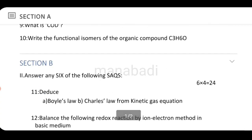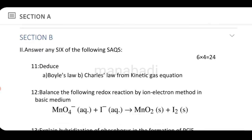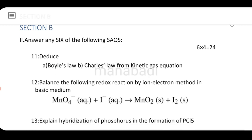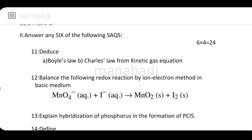Next is Section B, the short answer section. Each short answer is 4 marks, and there are 6 questions making 24 marks total. First question: Deduce Boyle's law and Charles' law from the kinetic gas equation. Using the kinetic gas equation, prove both Boyle's law and Charles' law through derivation.